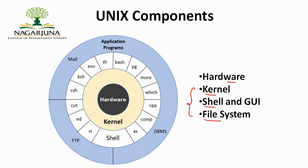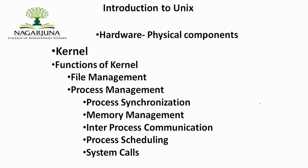This diagram represents Unix system architecture, and hardware is the innermost layer followed by kernel, shell, and file system. The first component is hardware, where all the physical components that are connected to your computer system is what we call hardware.